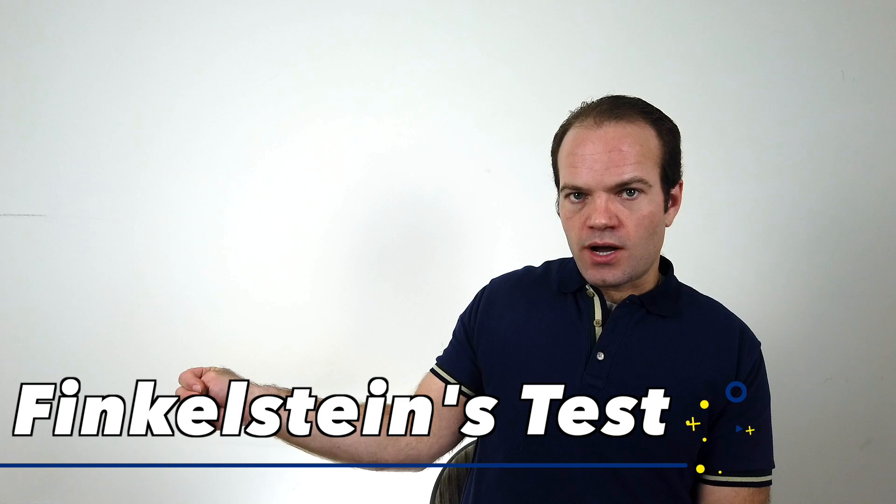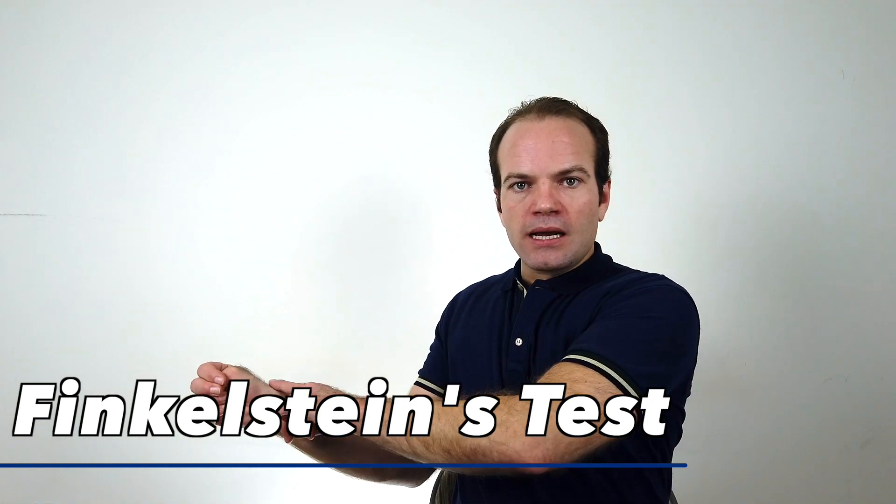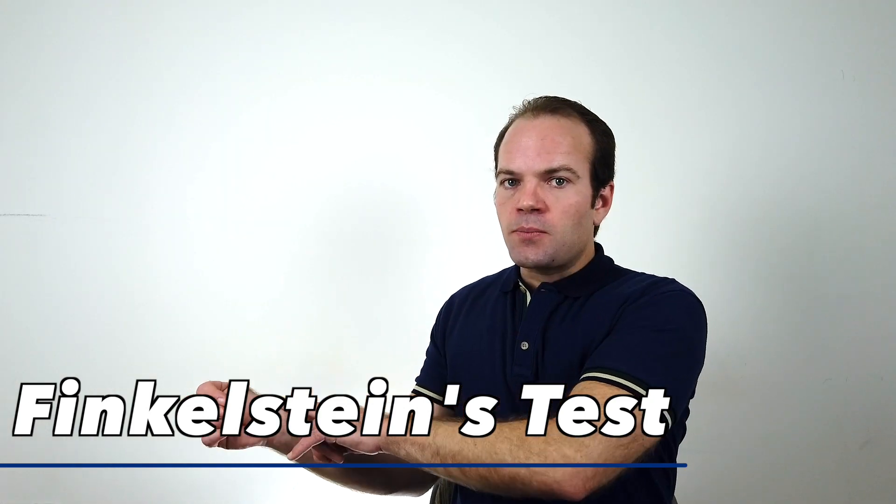And the way to figure out if this is your problem is to tuck the thumb in your hand, curl the fingers around the thumb, place the arm out to the side, and gently bring the hand down towards the ground. If this creates pain in this part of your hand, then that's a positive Finkelstein's test. For more information about how to rehabilitate from this issue, refer to a different past video that I've created, which will show you some information about how to rehabilitate from this condition.